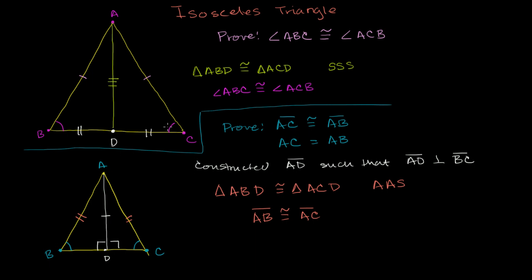If the two legs are equal, then the base angles are equal — a very useful tool in geometry. As a bonus: in the first proof we set D as the midpoint; here we set D as the foot of the altitude, without assuming it was the midpoint. But since these two triangles are congruent, BD is congruent to DC — they're corresponding sides — so D actually is the midpoint. This means AD is the perpendicular bisector of BC: not only is AD perpendicular to BC, it also bisects it.